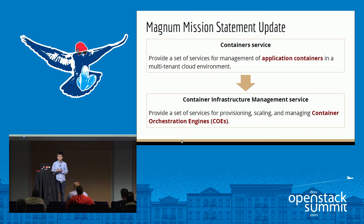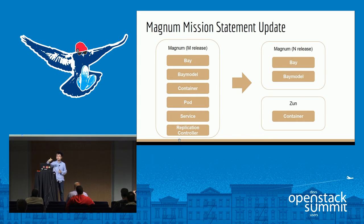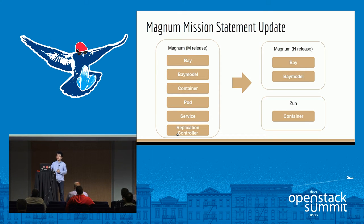Along with the update of the mission statement, there were changes at the API level. In the earlier release, Magnum had Bay and Bay Model resources for provisioning COEs, a Container resource for Docker Swarm containers, and Kubernetes resources such as Pod, Service, and Replication Controllers. In the current release, what remains in Magnum is only Bay and Bay Model — all other container-level resources have been removed. Those container resources are now introduced in the new project called Zun.